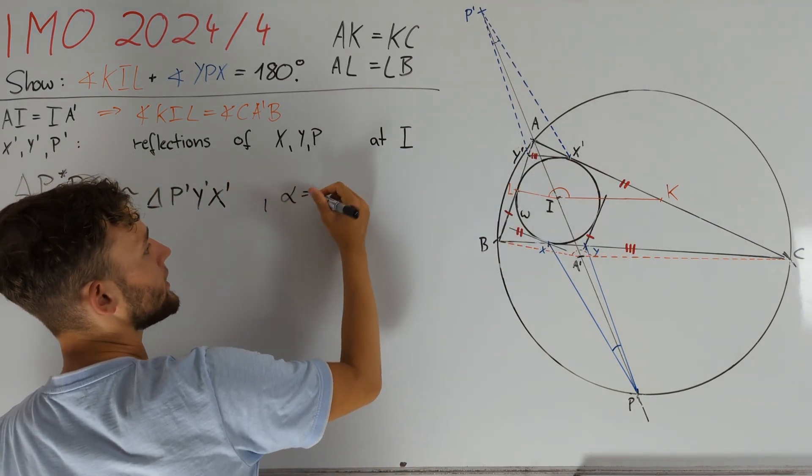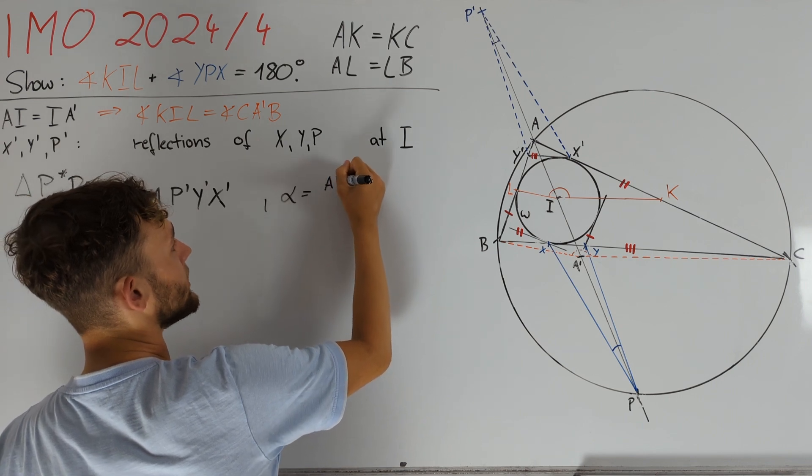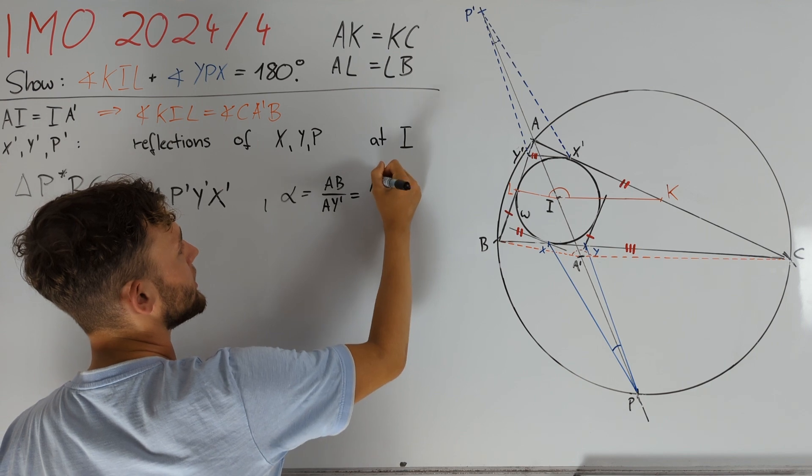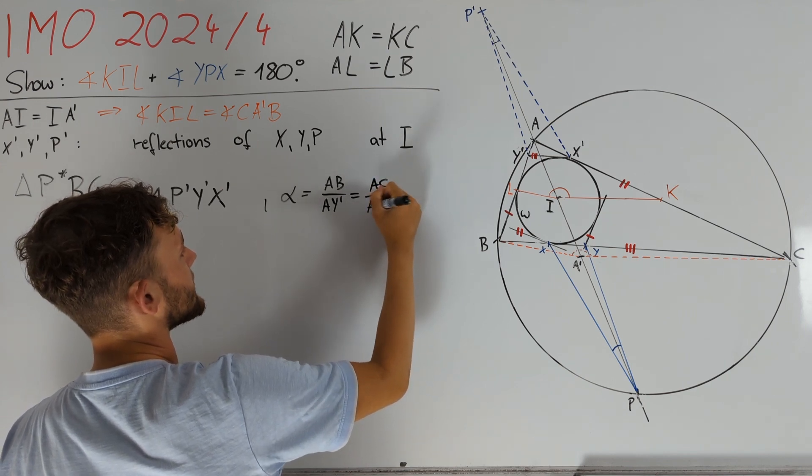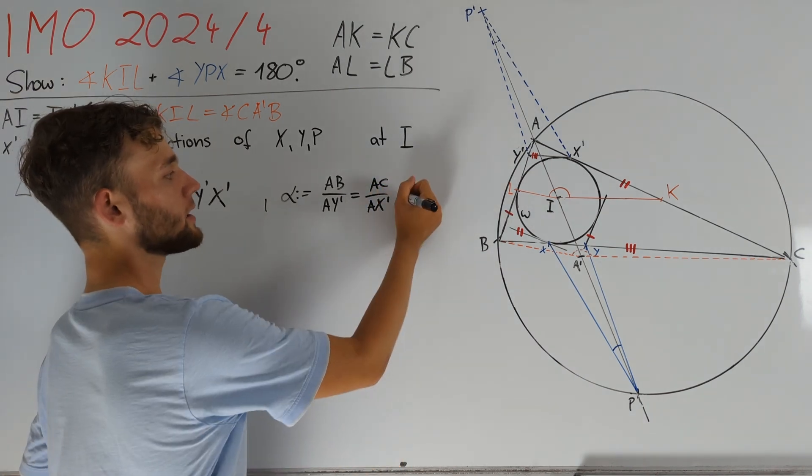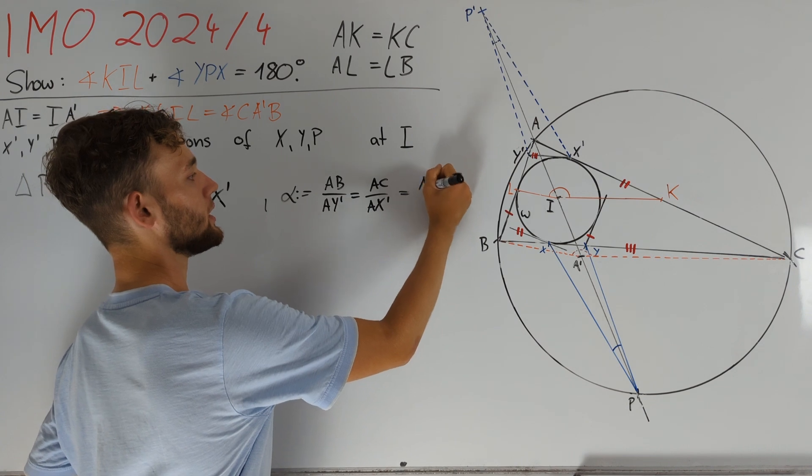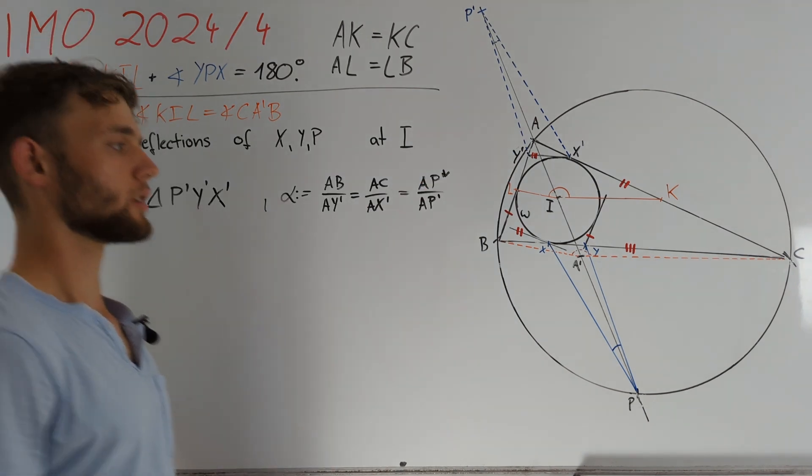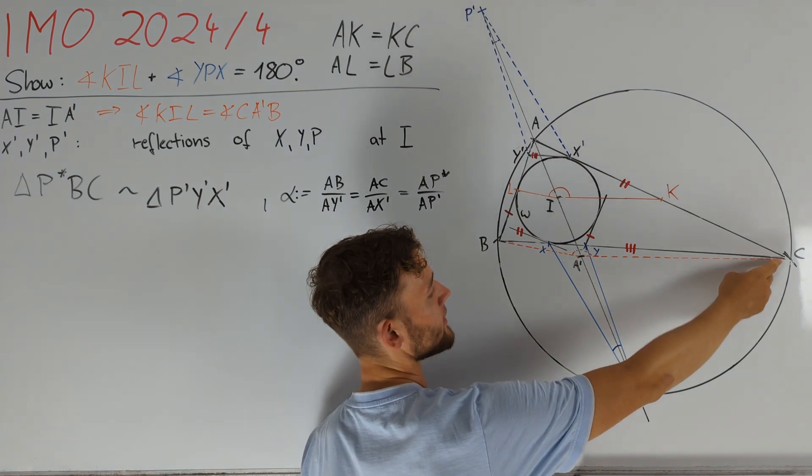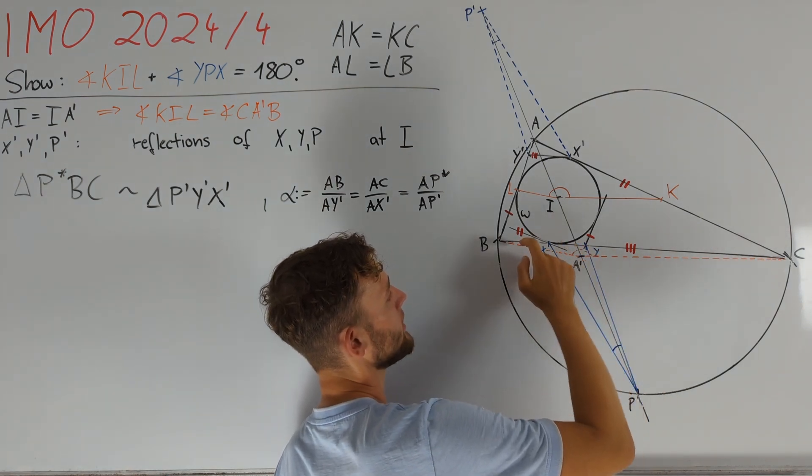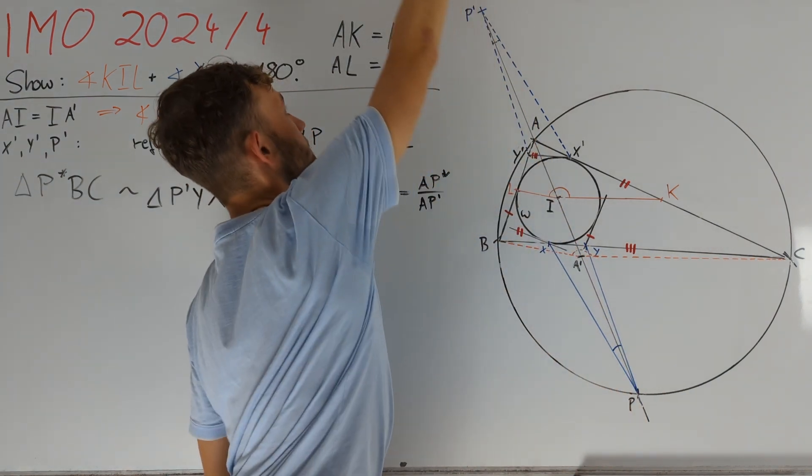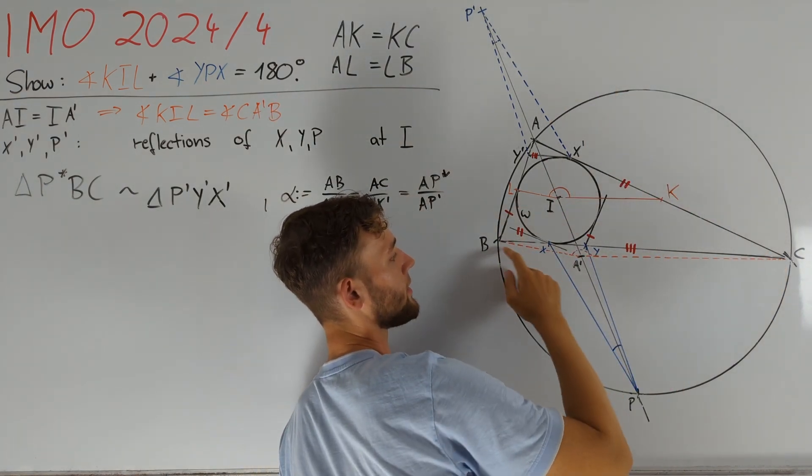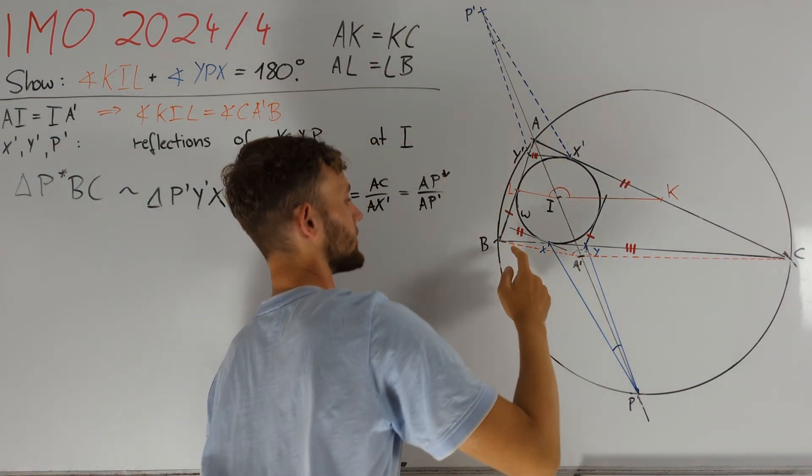Furthermore, let us denote the scaling factor of this homothety with alpha. So alpha equals AB divided by AY', which is also equal to AC divided by AX'. By definition of P star, alpha is equal to AP star divided by AP'. As I already mentioned, we want to show that angle CA'B plus angle BP star C is equal to 180 degrees, or in other words, that this is a cyclic quadrilateral.